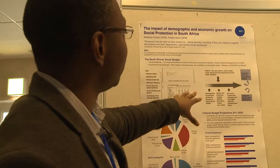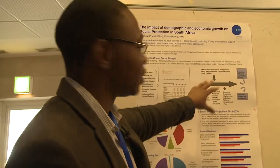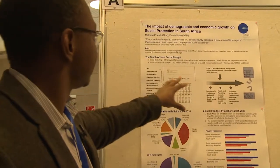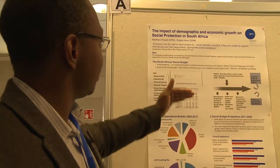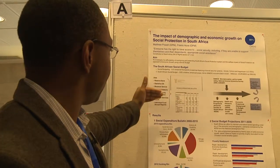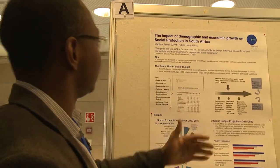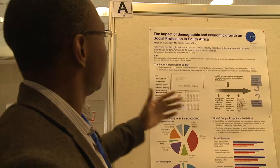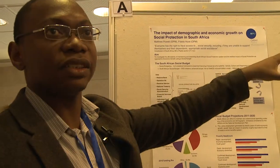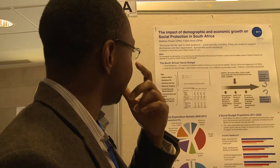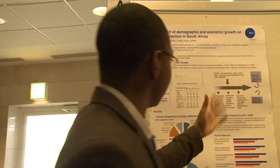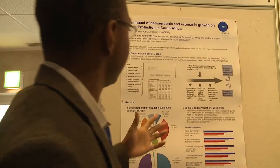The second component is a projection model that takes the data from the systematic accounting system and projects it into the future, so you can start to analyze policy questions. The model is made up of different sub-components.